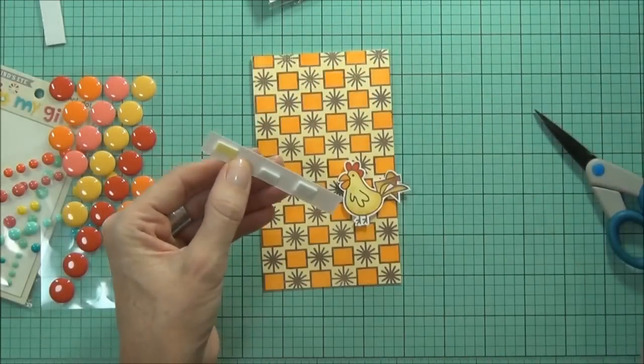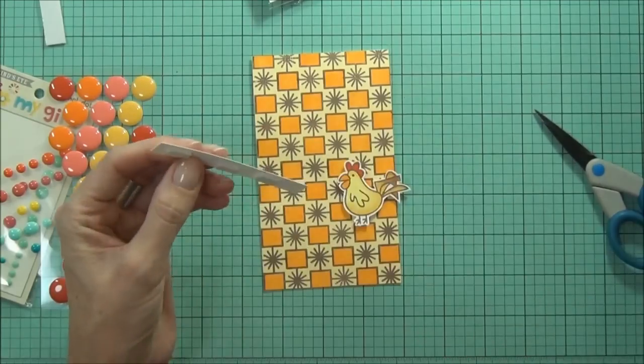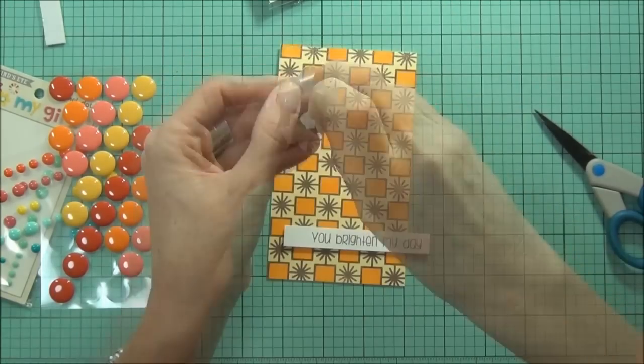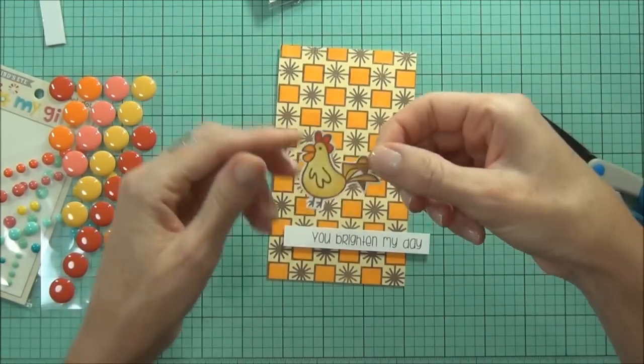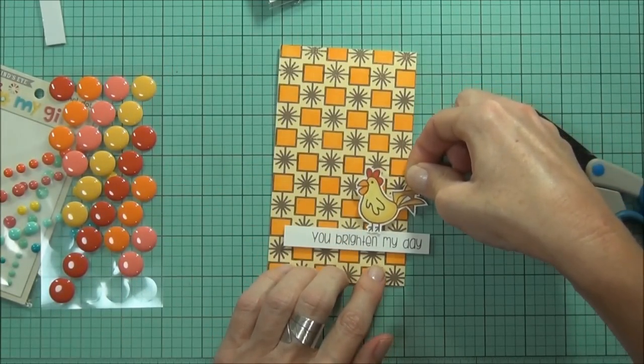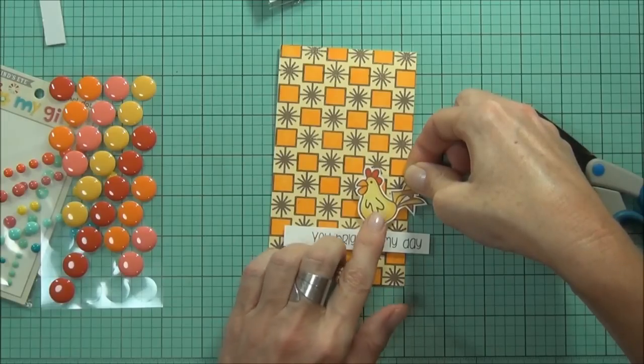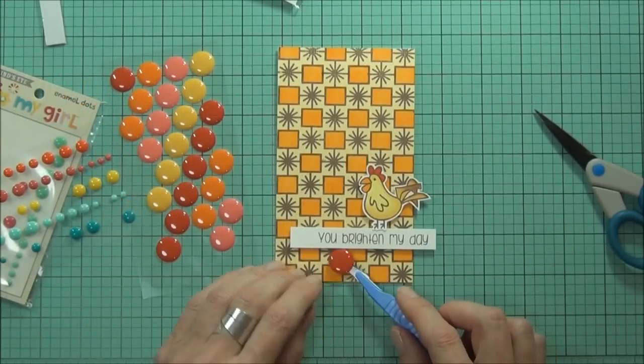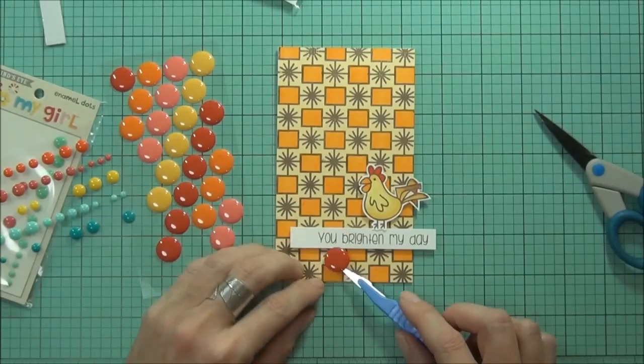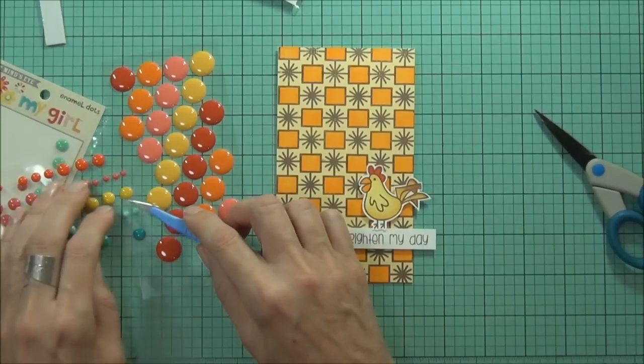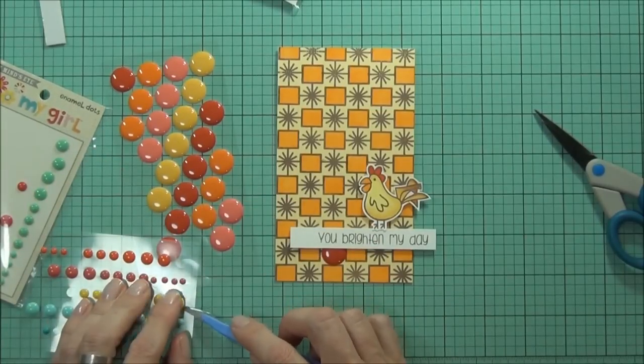And I've put some foam on the back of my pieces. I purposely left the white edge around the rooster so that it'll just be a little bit more visible on the busy background. And finally I've got some enamel dots. This one is from We Are Memory Keepers and some My Mind's Eye ones as well.